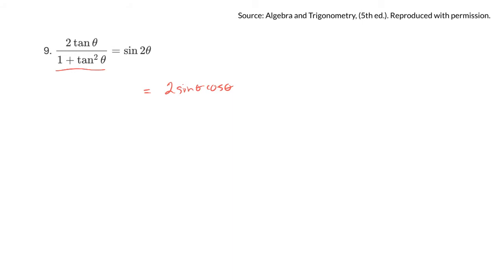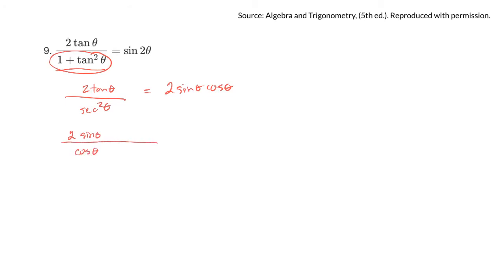Looking at the formula sheet — 1 plus tan squared, I can call it secant squared. So if I have 2 tan θ over that expression, everywhere I see 1 plus tan²θ I can write sec²θ. Now, tan θ is the same as sin θ over cos θ. And sec²θ — if I move it to the top, it becomes cos²θ. Hopefully that gets you to a spot where you can see it comes out to the other side.